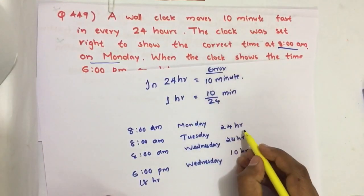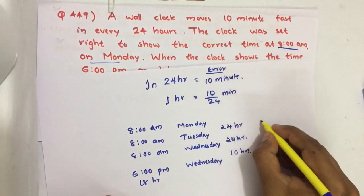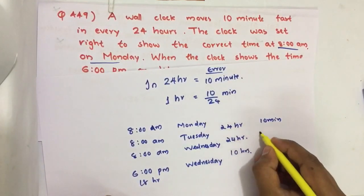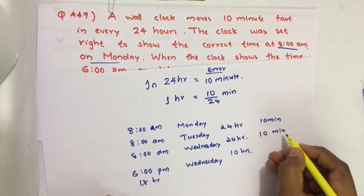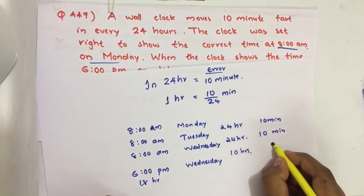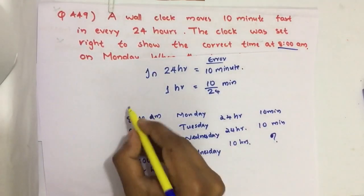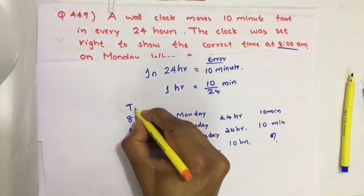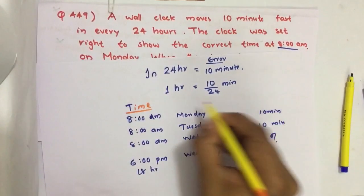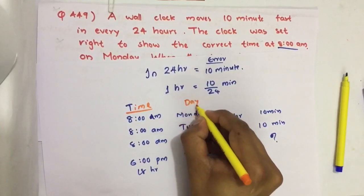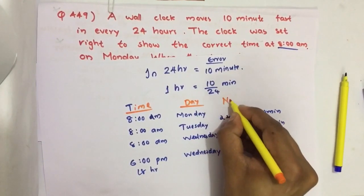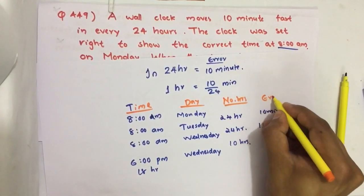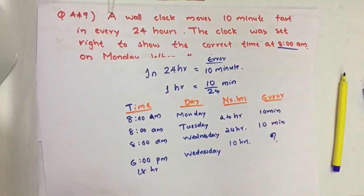We know for 24 hours the error equals 10 minutes. Then again here 24 hours error equals 10 minutes. For 10 hours error we have to find. This is time, this is day, this is number of hours, 10 hours. This is error.